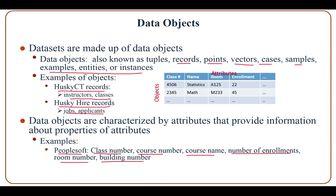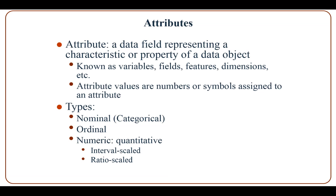Now let's talk about attributes. An attribute is a data field that represents a characteristic or property of a data object. Attributes are known as variables, fields, features, dimensions, etc. The values of an attribute can be numbers or symbols.